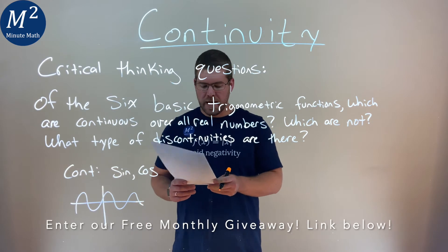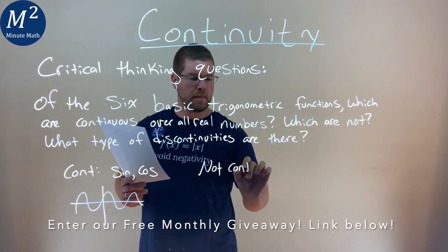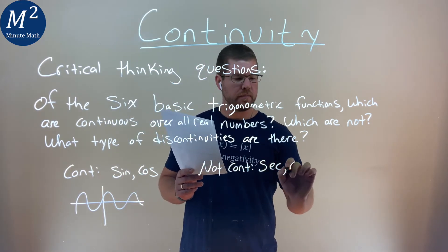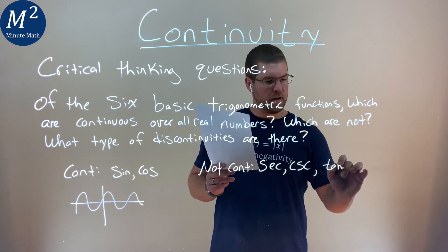All the other ones are actually not continuous. That would be secant, and notice I'm putting a lot of order here, cosecant, tangent, and cotangent.